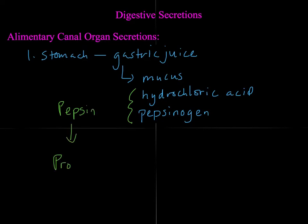Accessory organs that produce digestive secretions include the salivary glands, which produce a substance called saliva. Saliva consists of water or serous fluid, mucus, and salivary amylase, which breaks down the carbohydrate amylose.